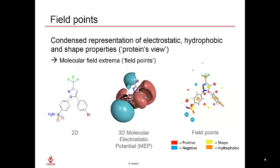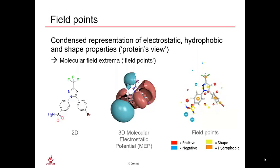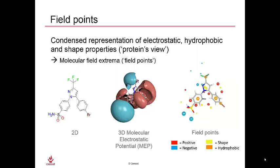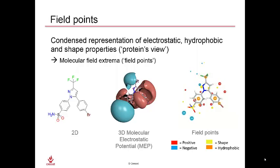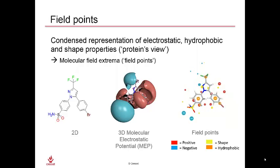Blue corresponds to areas where the electrostatics are negative. Red corresponds to areas where the electrostatics are positive. Yellow field points give us an idea of the van der Waals accessible surface area, and orange field points are in areas of hydrophobicity. The size of the field point corresponds to the strength of the field at that point in space. The presence of a field point suggests that this is an area of the ligand which may form a favorable interaction with a protein receptor,